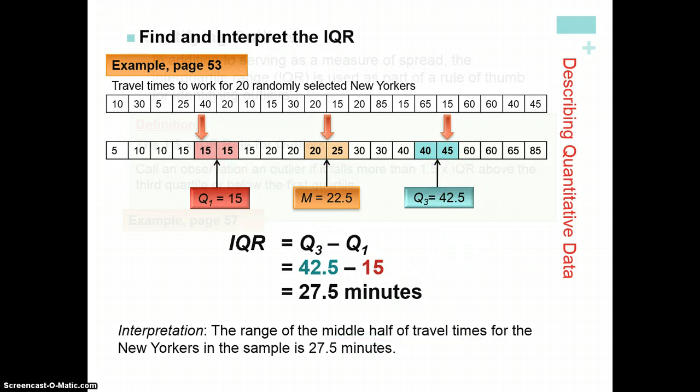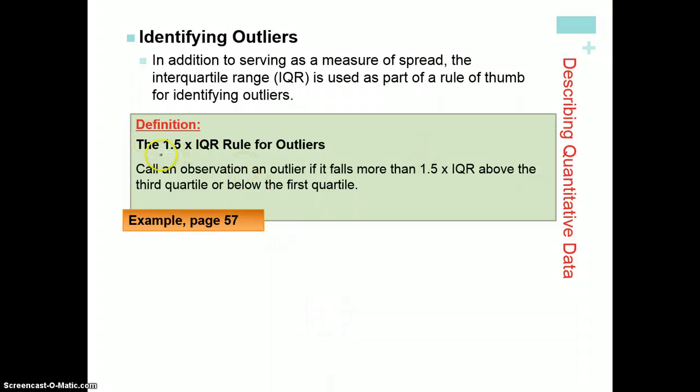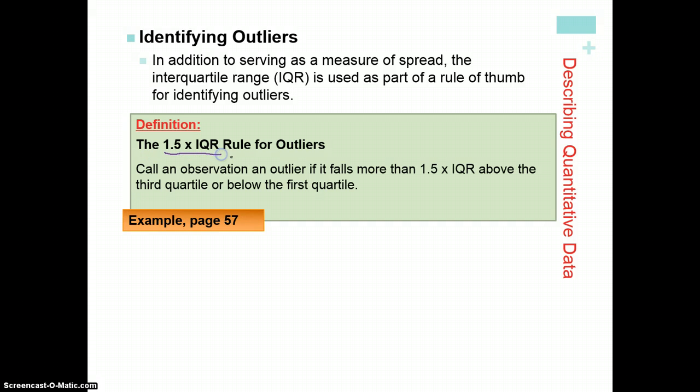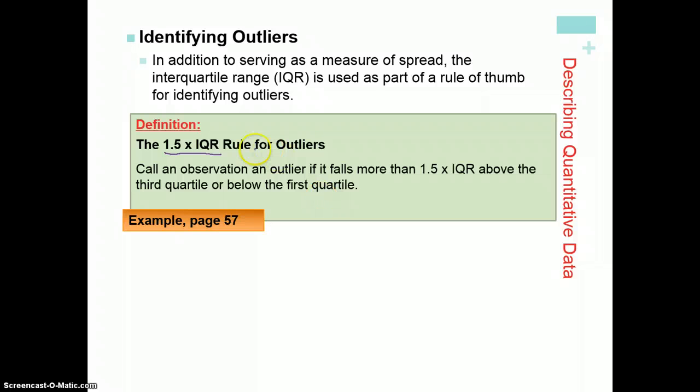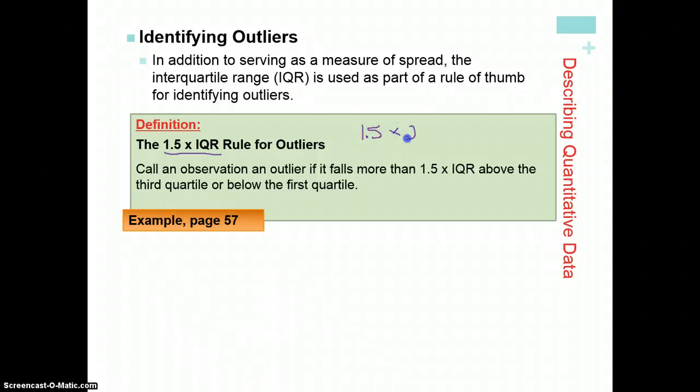So moving on. In addition to serving as a measure of spread, the interquartile range is used to calculate outliers. So we're going to use this 1.5 times whatever the IQR is. So 1.5 times our IQR, our IQR was 27.5. That would be what we are calculating, and I actually do calculate it below.